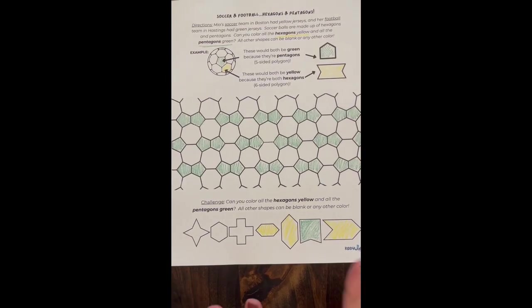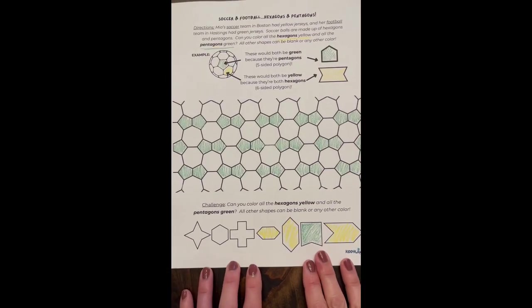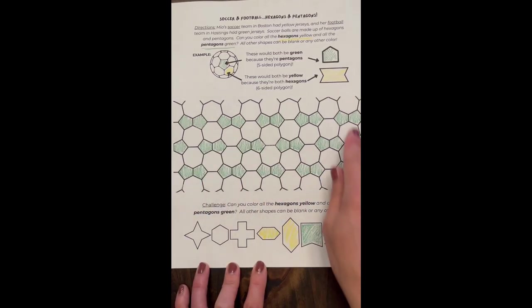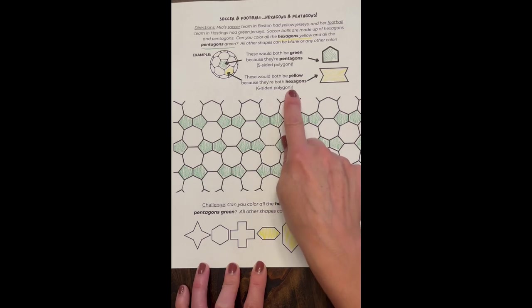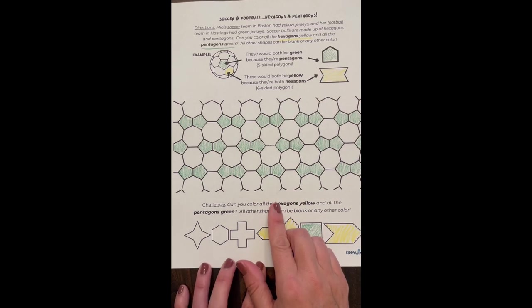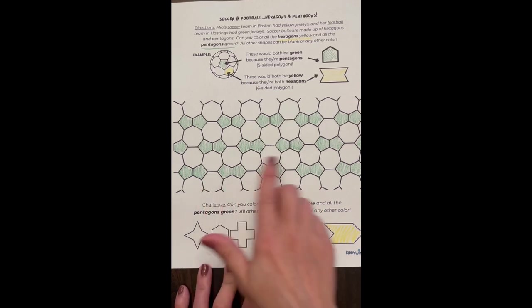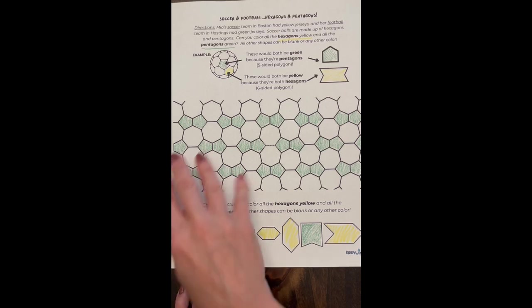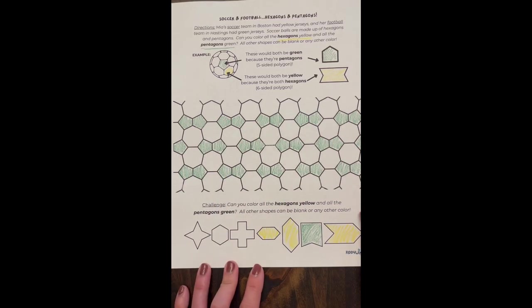Okay, so your completed work might look similar to this, although perhaps you made it more colorful. You might have done something with all the rest of these that are not hexagons. They're actually heptagons because there's seven sides. It's so tricky though. So if you colored those in yellow thinking they had six sides, I totally get it. It looks a lot like what a soccer ball would look like, so it looks like they should be hexagons but they can be a different color.